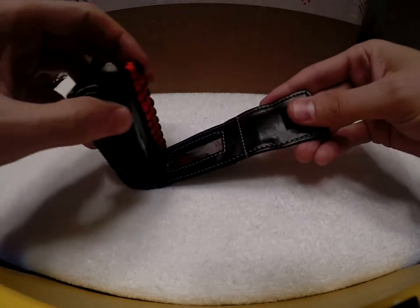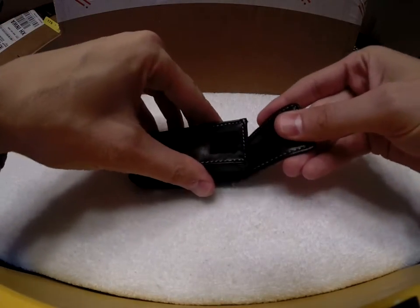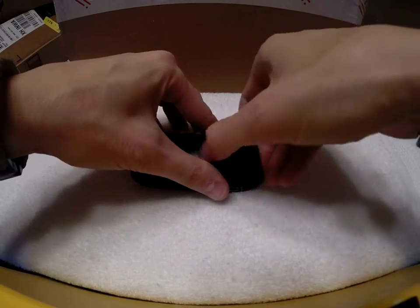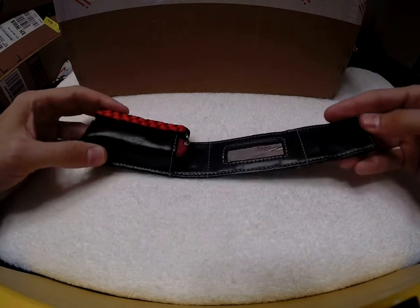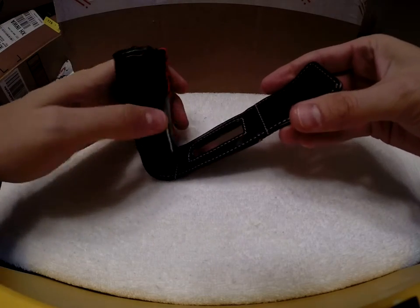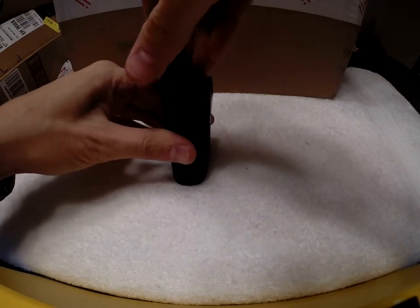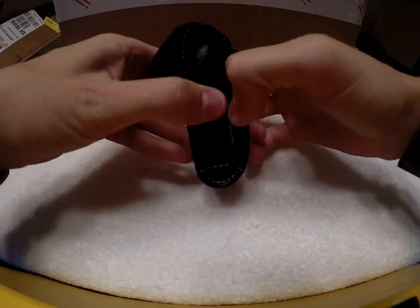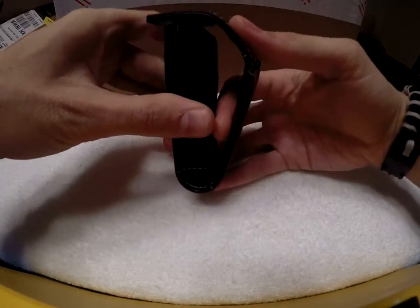It has an interesting way of closing. It's Velcro. And this is basically the belt loop itself, so you can weave that into your belt right here.